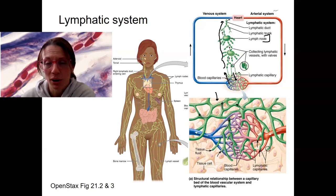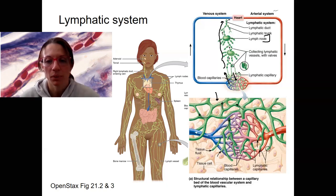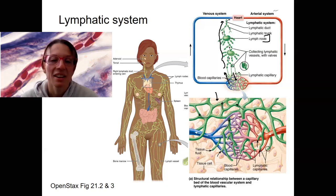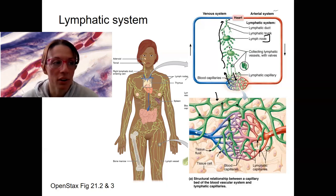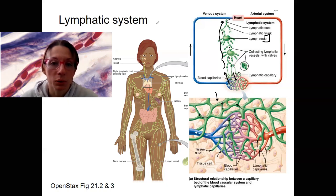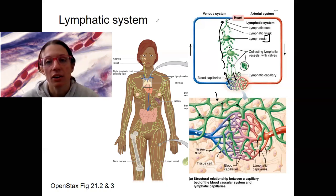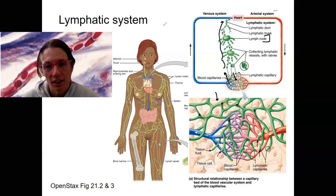It's kind of like the endocrine system where you could argue that any organ is endocrine — a lot of your tissues have immune function as well. So I'm just going to hit some of the big ones. Lymph nodes, which I talked about, cleanse lymph. Lymphocytes are a type of leukocyte and they proliferate in these lymph nodes.